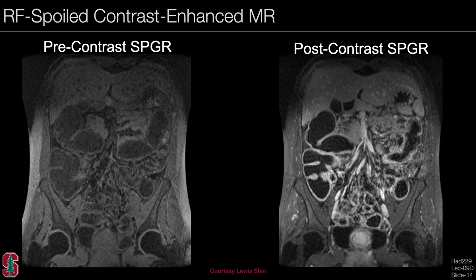Looking at example images to compare sequences: RF spoiling is typically used for pre and post contrast imaging where we inject a gadolinium contrast agent. This shortens T1, making tissue much brighter on a T1 weighted sequence. For example, the wall of the bowel is visible in the post-contrast image, providing a high-resolution image acquired fairly quickly.